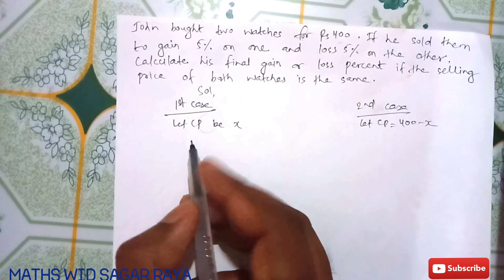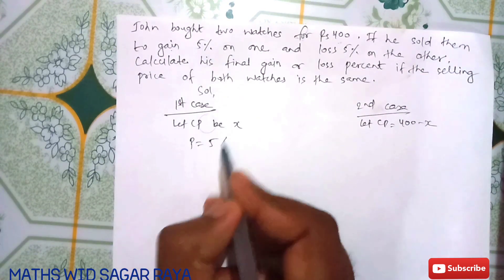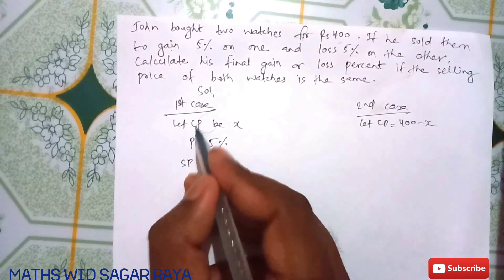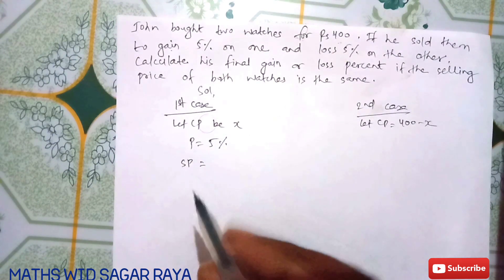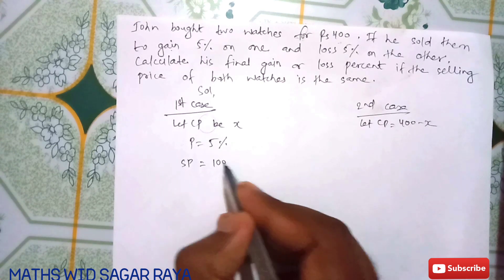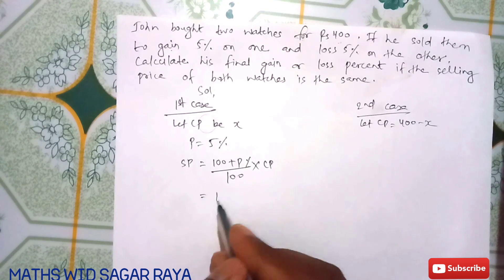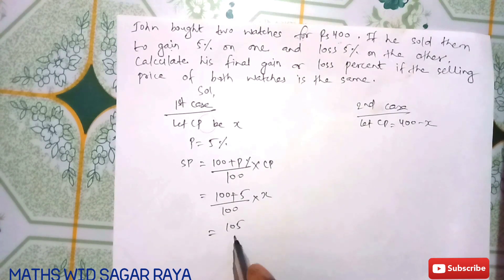In the first case there is a profit of 5%. When CP and profit are given, you can use the formula for SP: (100 + P%) / 100 × CP. So (100 + 5) / 100 × X = 105X / 100.